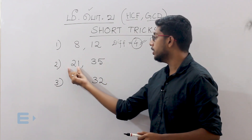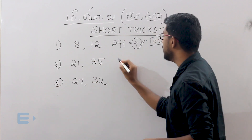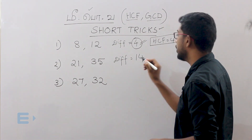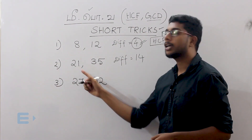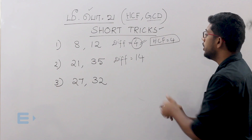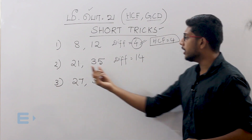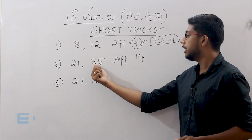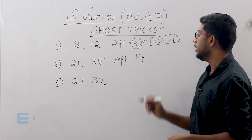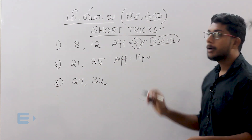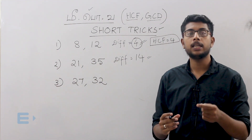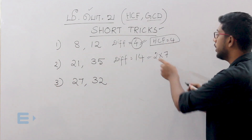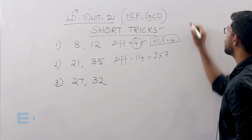Next, 21 and 25. For this, the difference is 4. So in 25 and 21, we are getting 4. This 4, 21 is divisible. 25 is divisible. What I am saying is, this 14 is not a prime number. It is not a prime number.